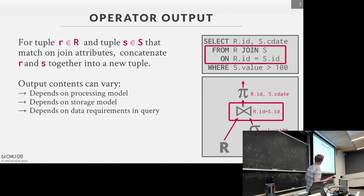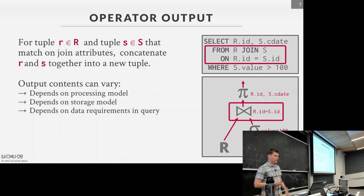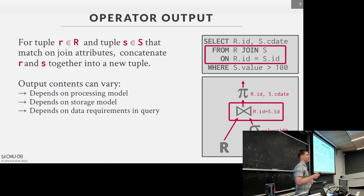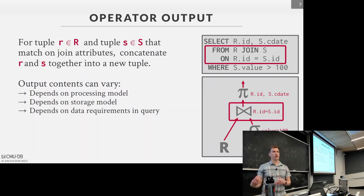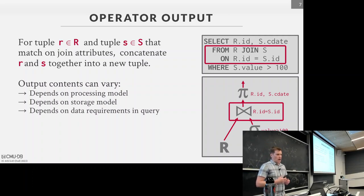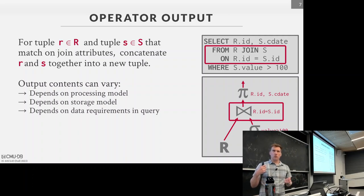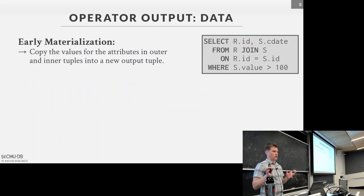The outputs can vary based on the processing model — tuple at a time or vectors. It's also going to depend on the storage model. Earlier in the class you talked about NSMs versus DSMs, also known as row stores versus column stores. Depending on how that data is organized and flowing up from the base tables, that's also going to inform how you implement these join operators. The data requirements in the query and what operators exist above these joins will also change what you want their inputs to be.